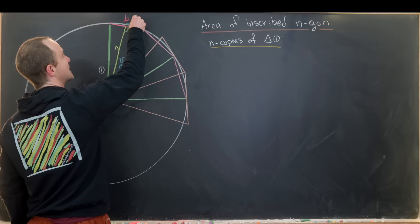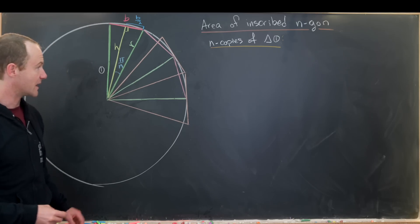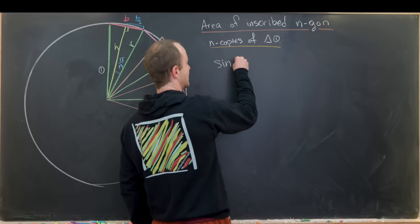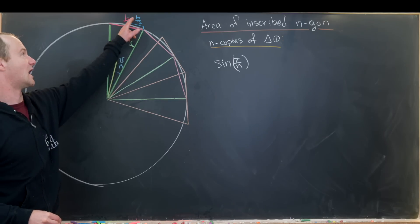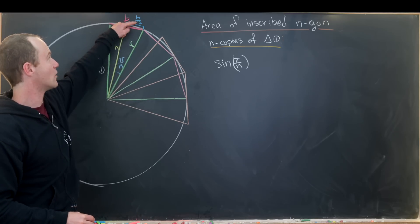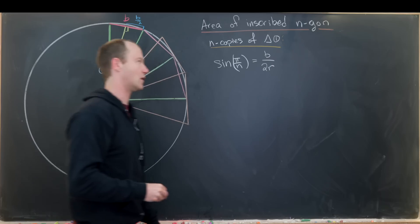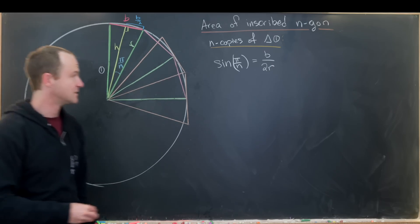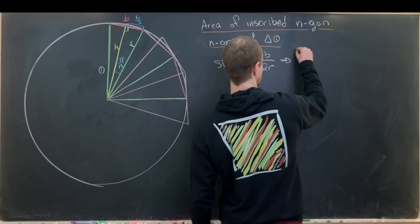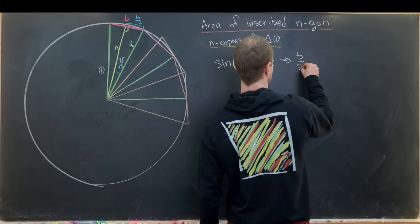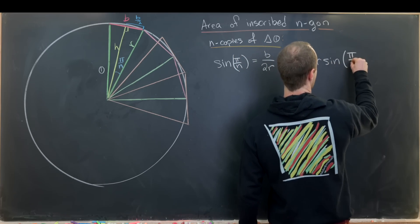We cut the base into two pieces, so each half is b over 2, because we're bisecting that line segment. Taking the sine of π over n: sine is opposite over hypotenuse, so that's (b/2) over r, or b over 2r. That means b over 2 is equal to r times sine of π over n.